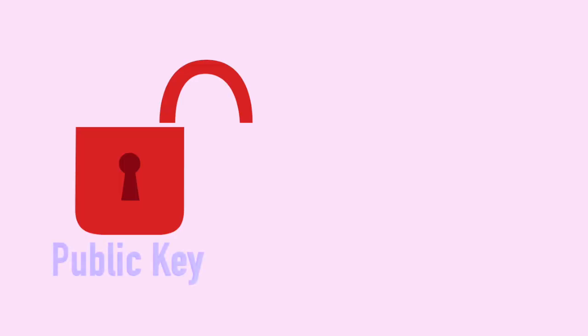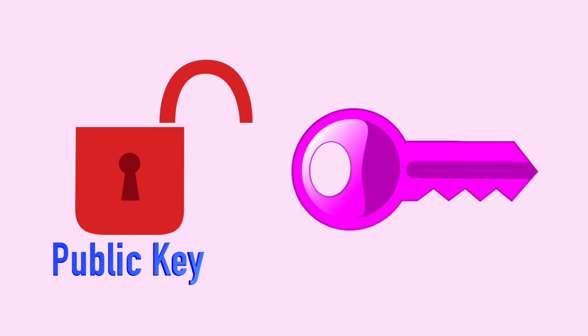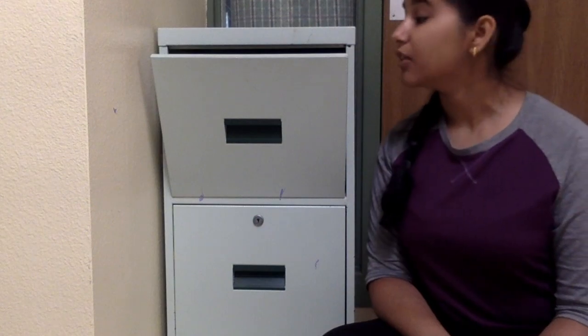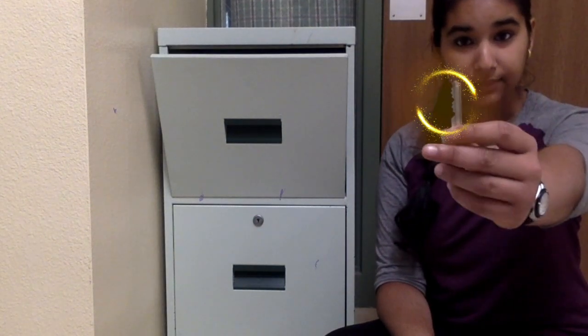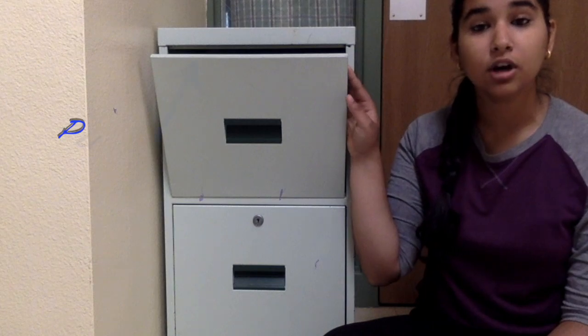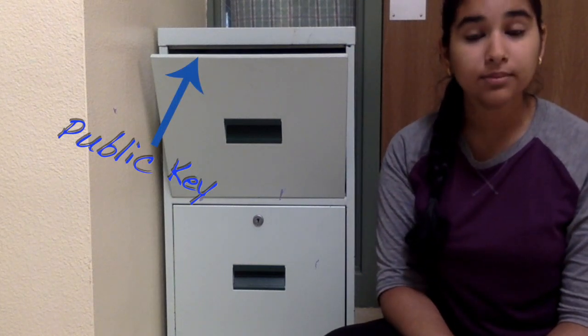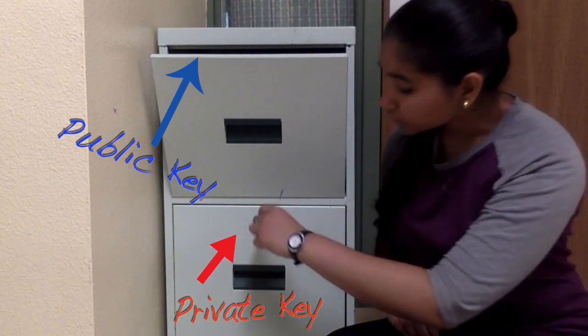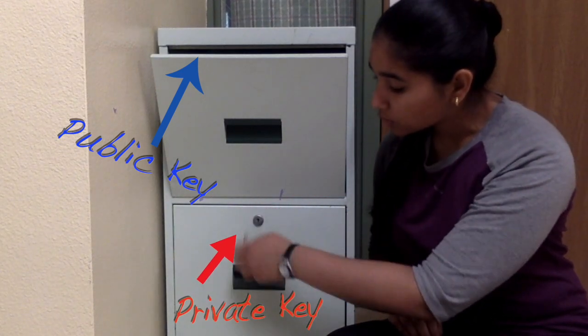The open lock is called the public key. Like the name suggests, it is available to the public. The key itself is called a private key and is kept a secret. Think of public and private keys like your mailbox. Anyone can send you letters at your address, but they can't read the other letters in your inbox. Only you can open it with your key. The opening is called the public key, which can only encrypt or lock it, and the key to open the mailbox is called the private key, which can only decrypt or unlock it.